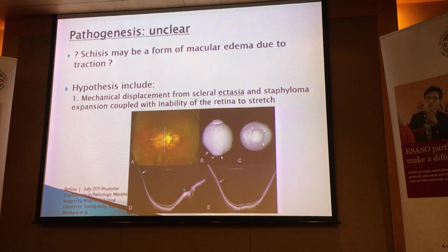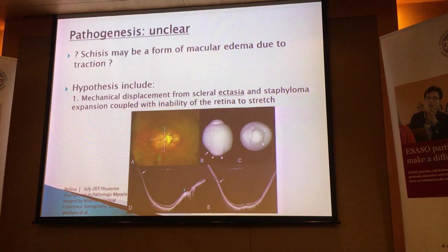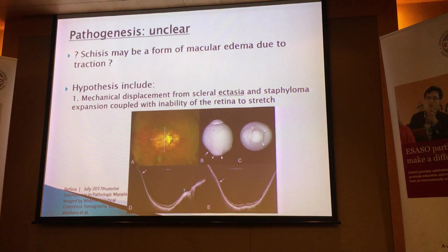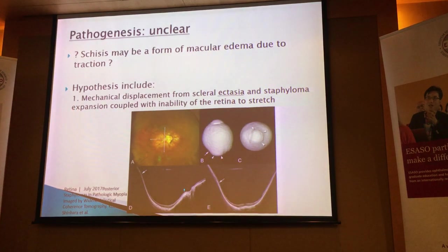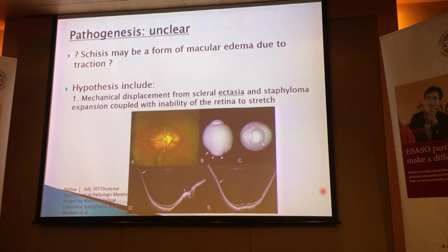As time went along, I think this is more and more dispelled as an urban myth. At the moment, what we are focusing on is actually four hypotheses. Firstly, the mechanical displacement of the sclera due to scleral ectasia — so expansion of the sclera, uncontrolled expansion — with the formation of the staphyloma in the posterior segment, coupled with the inability of the retina to stretch and drape nicely over the contour of the posterior segment.